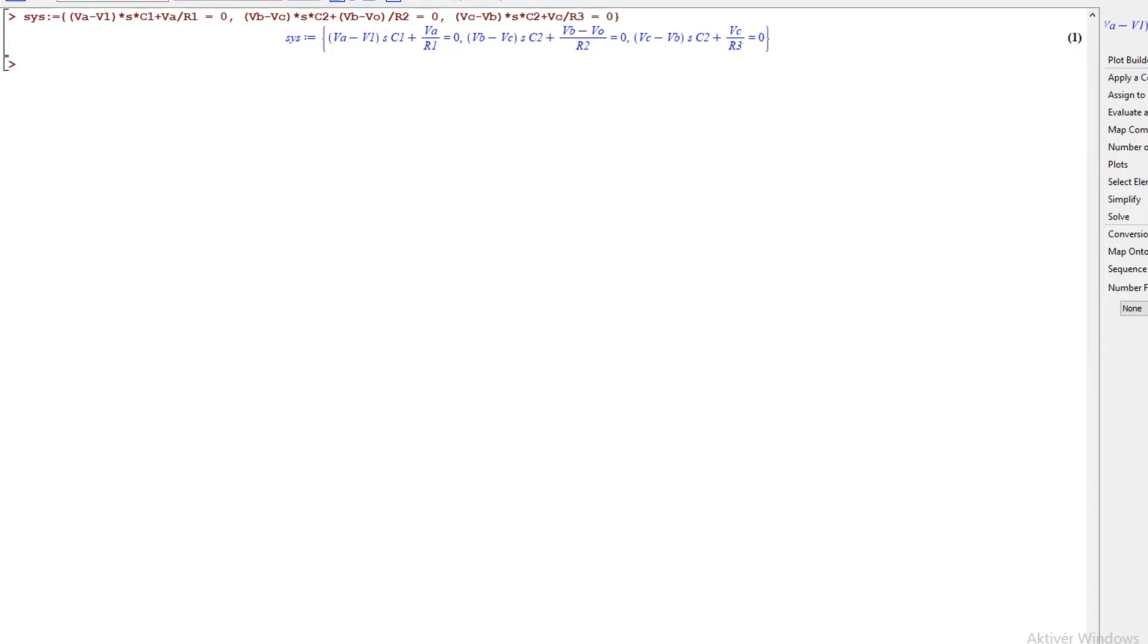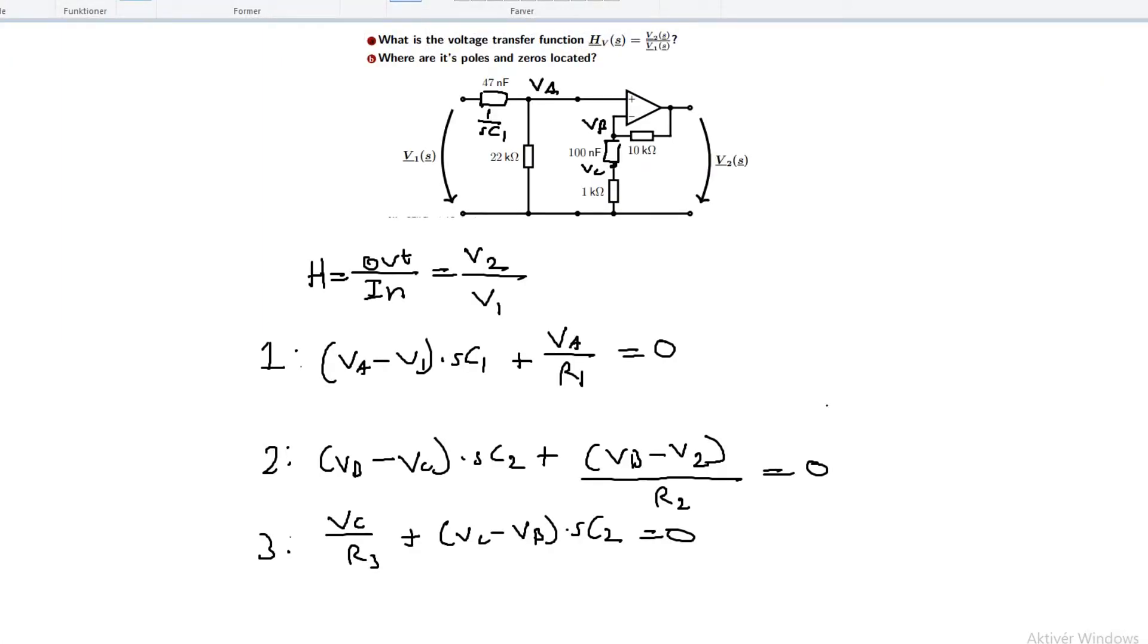Now I've written the equations up in Maple as a system of three equations. We're not ready to solve the equation yet, or the system of equations yet, because we have to utilize one of the op-amp's abilities. That is the virtual short. This virtual short means that the voltage at the non-inverting input is the same as the voltage at the inverting input.